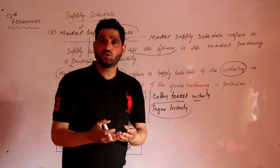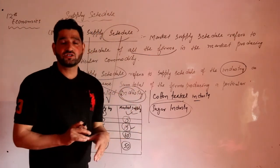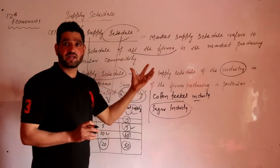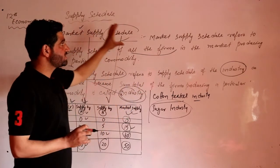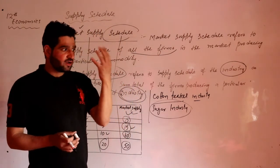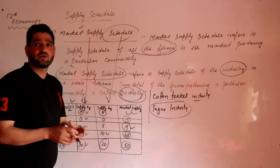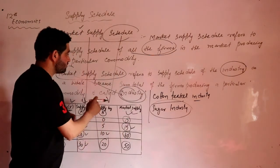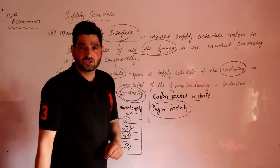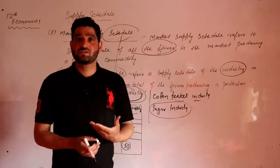So in summary: the individual supply schedule is a statistical table which shows the various quantities of a commodity sold by a particular or individual firm in the market at various prices. The market supply schedule is a table which shows all the quantities ready for sale by all the firms at various possible prices — and the market supply schedule is the supply of the industry as a whole. Hope you understood this clearly; next we will have more lectures on supply.